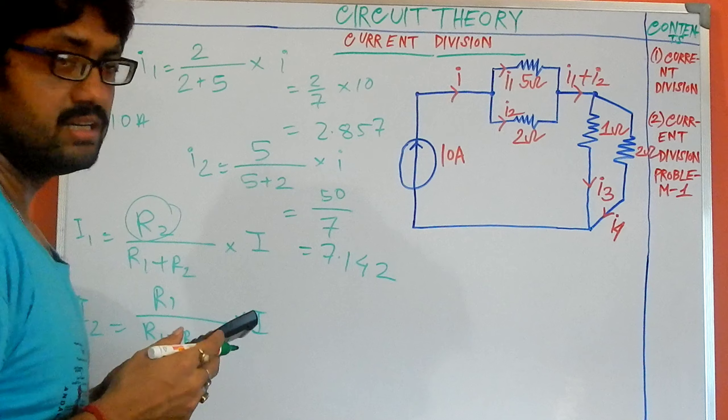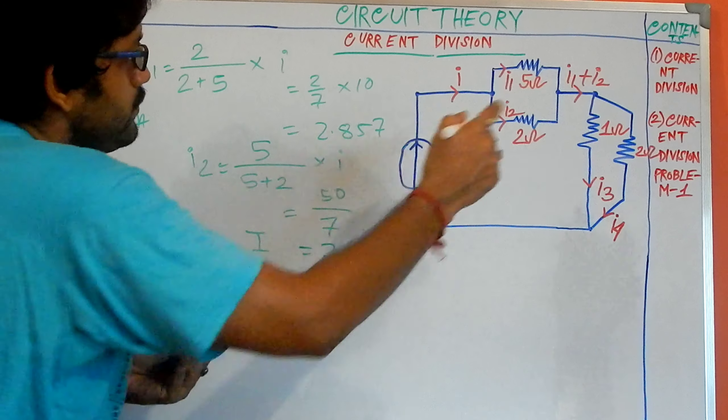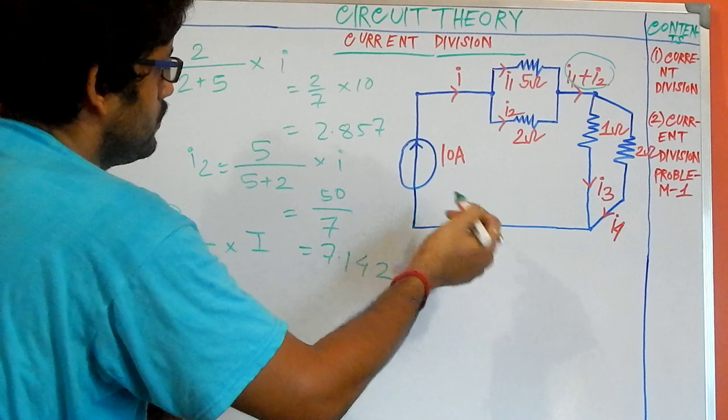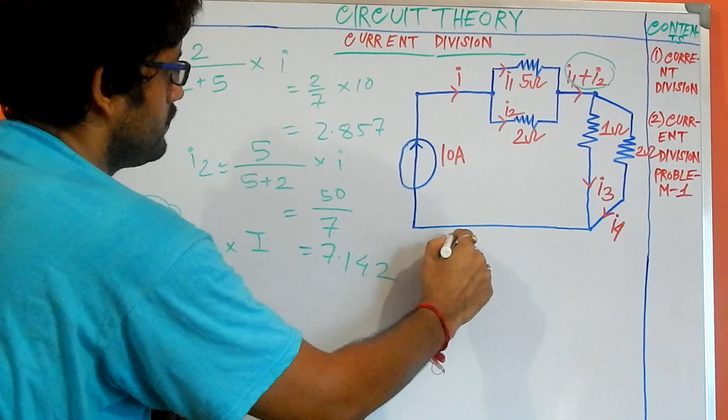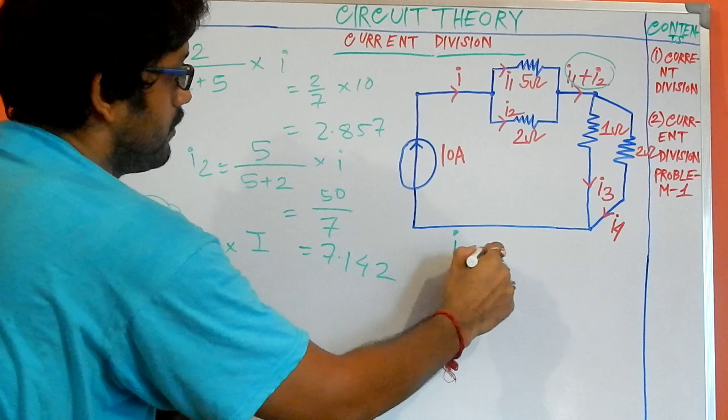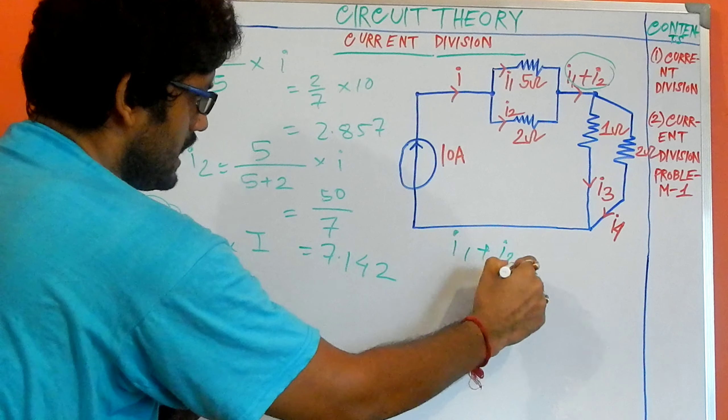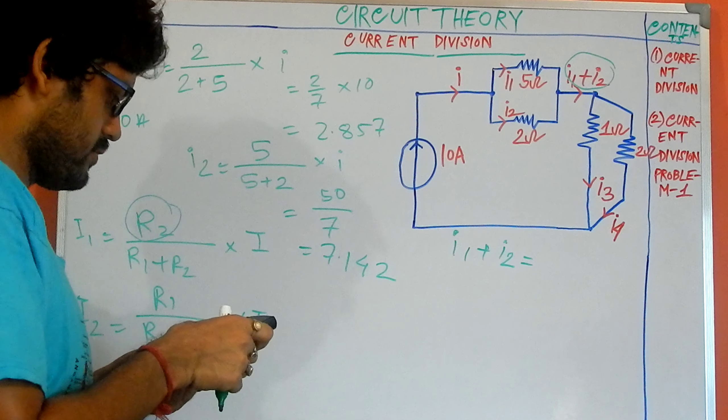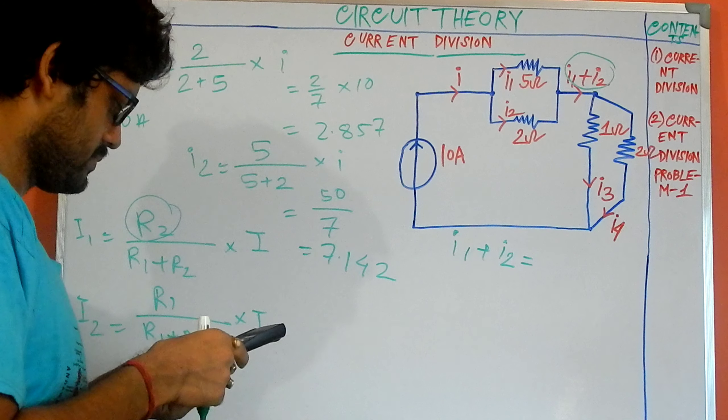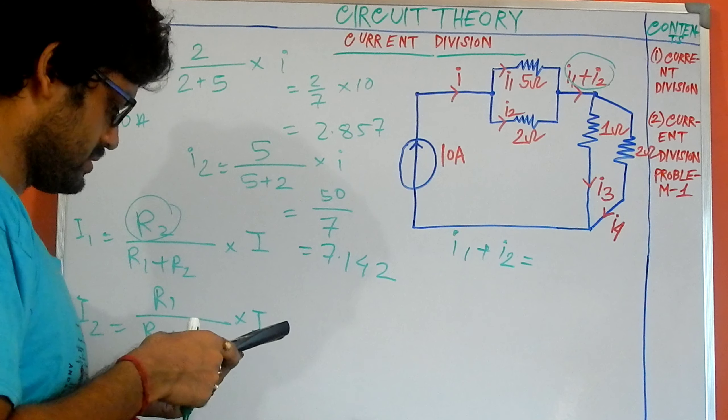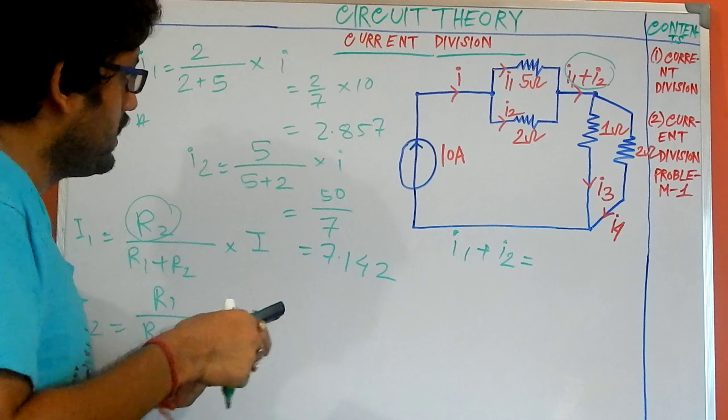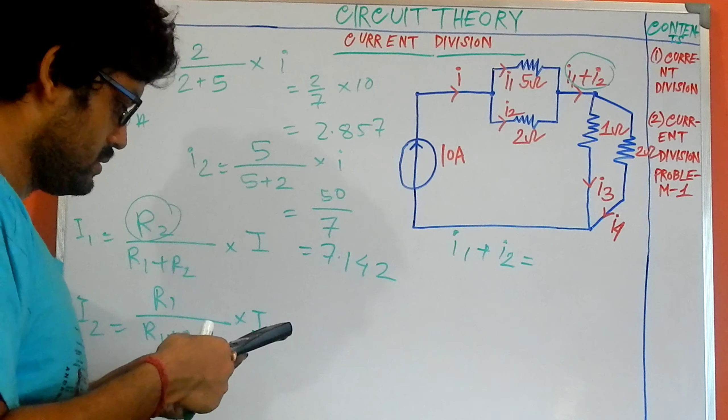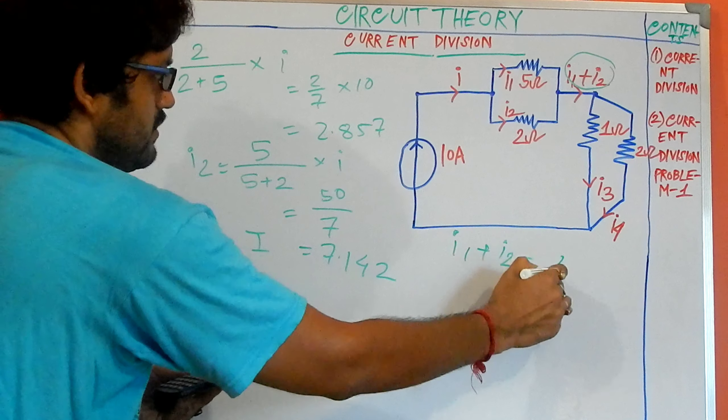Is that clear? And in this portion, I1 plus I2 is always 10. So for the surety of your formulation, you should add these two currents and I am calculating here: 2.857 plus 7.142, which is giving us a near value of 10.